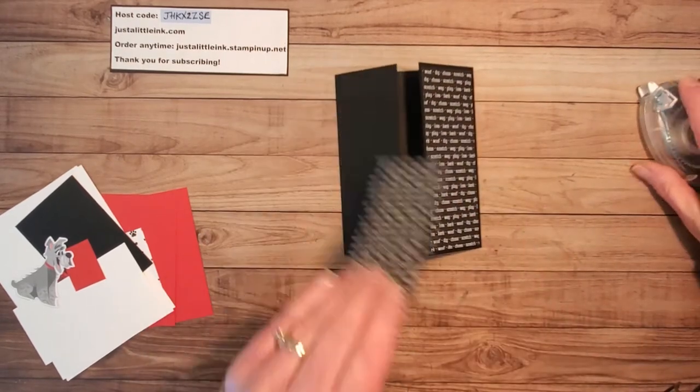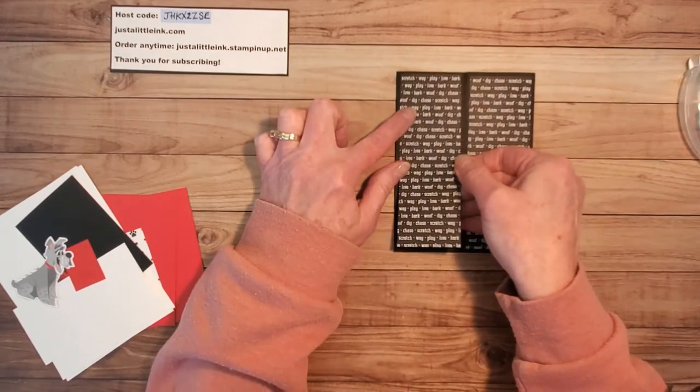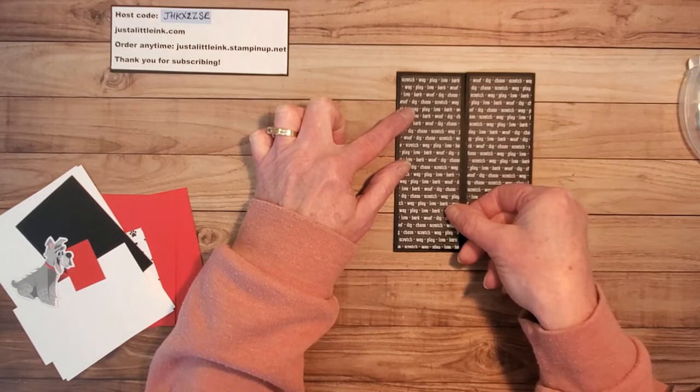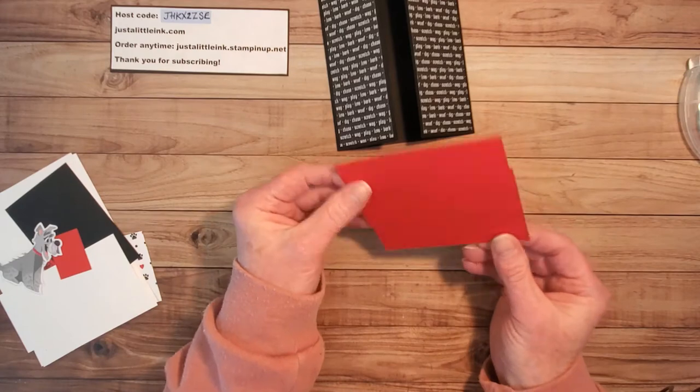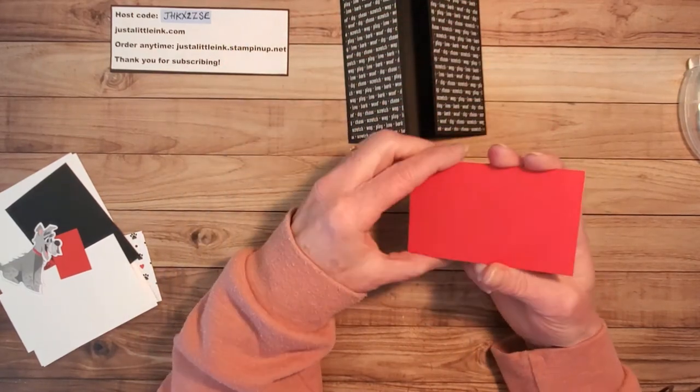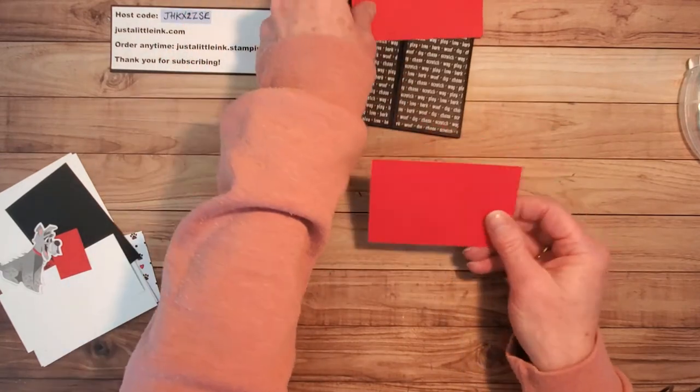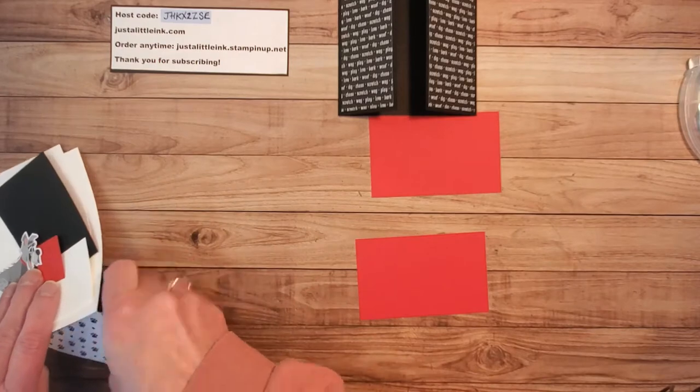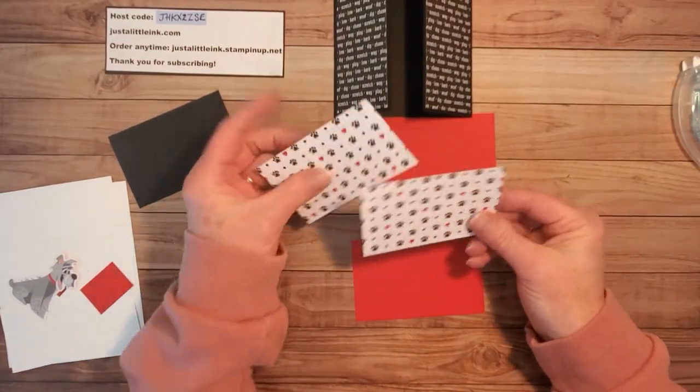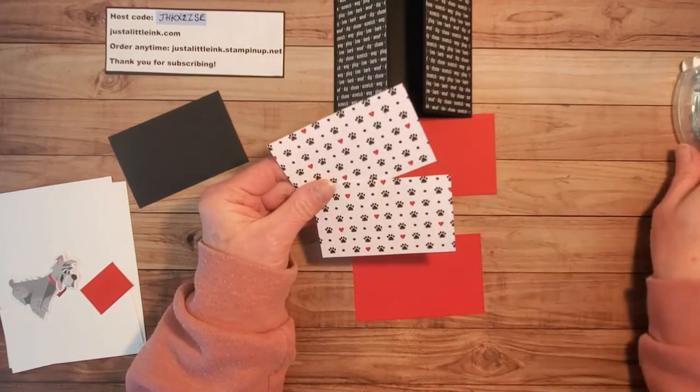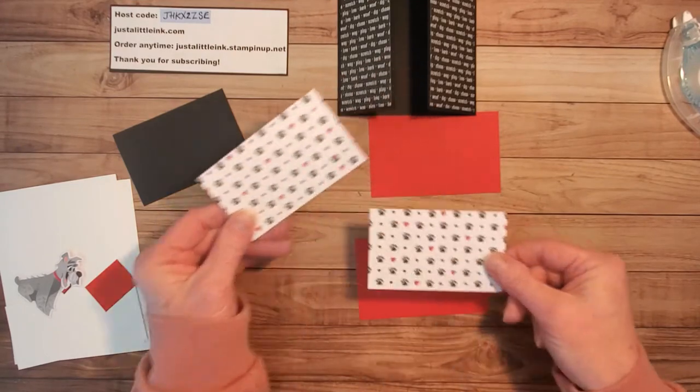So I'm going to attach my two pieces of designer series paper on the front of my card and I also want two pieces that are coordinating. This is the same size. So these are two and a half inches by four inches and I'm going to layer on them two pieces of designer series paper.